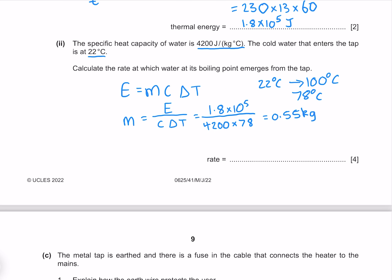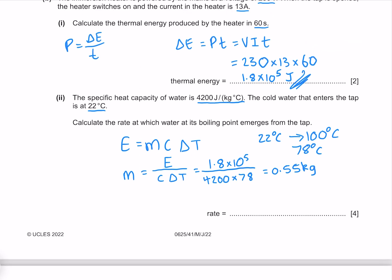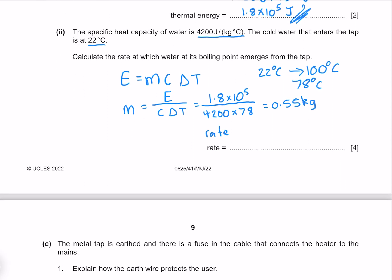Which gives me 0.55 kilograms to two significant figures. Now because we used our thermal energy here, and this is the energy of 60 seconds, to find our rate we need to take our 0.55 kilograms and divide it by our 60 seconds, which gives me 9.1 times 10 to the minus 3 kilograms per second to two significant figures.